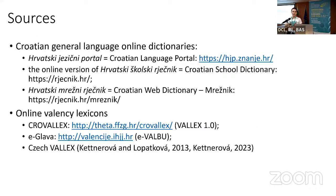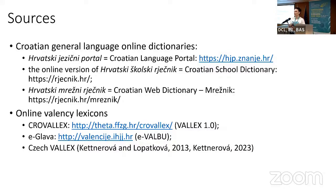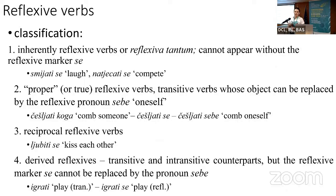Regarding reflexive verbs, we looked at a few Croatian general online dictionaries to see how they treated them: the Croatian language portal, the Croatian school dictionary, the Croatian web dictionary which is corpus-based, and valency lexicons such as CroValex — which is based on Czech ValLex 1.0 and has around 1,000 verbs — and eGlava, which has only 57 psych verbs and is based on the German EVALBU. We also looked at Czech ValLex as a role model.